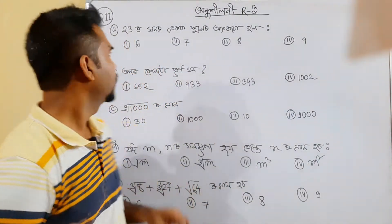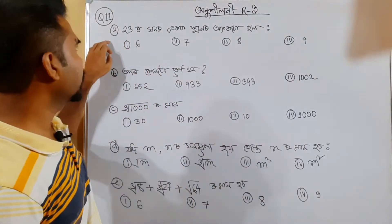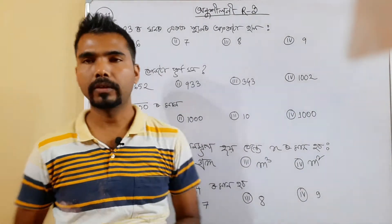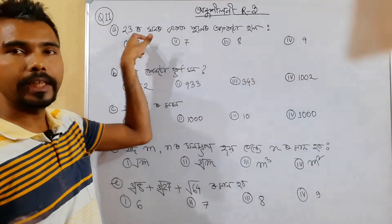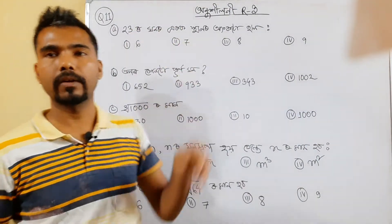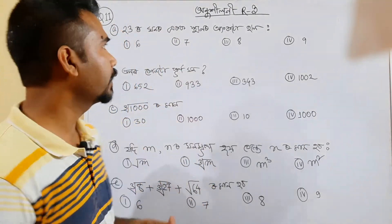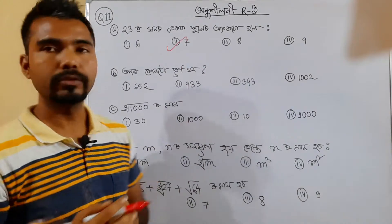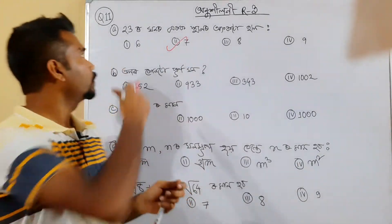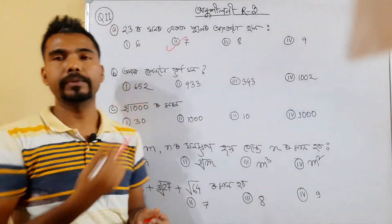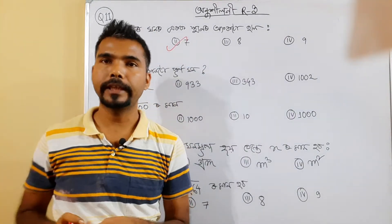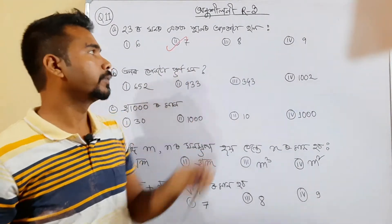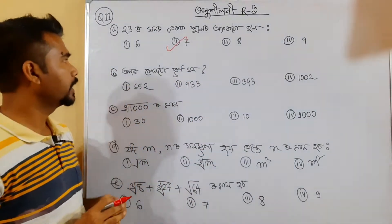The options are: 28, 23, 21, 3, 10-3, 7. Then 28, 23, 27, 7. Question No. 11.